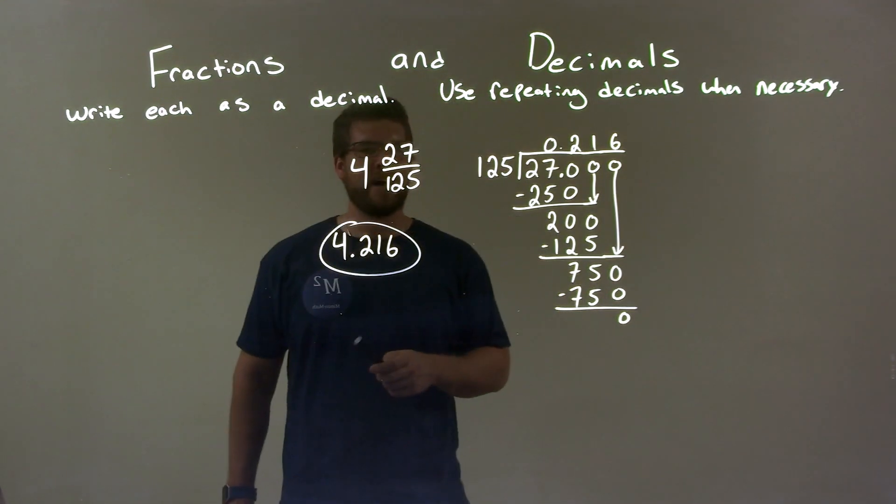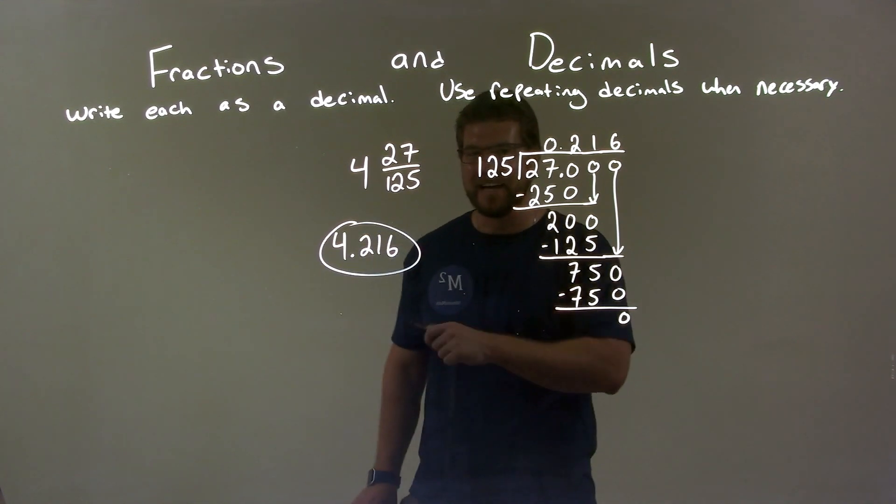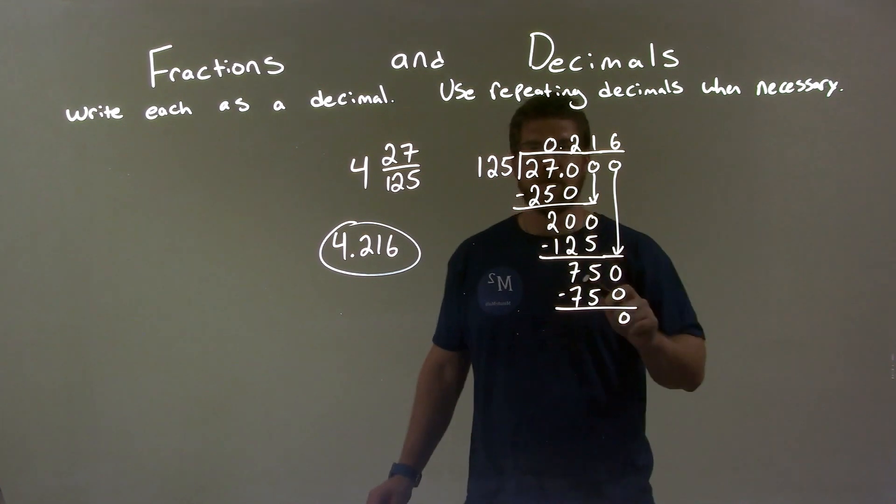All right, so quick recap. We're given 4 and 27 over 125, and we had to write that as a decimal. So, I dealt with the 27 over 125 and did long division.